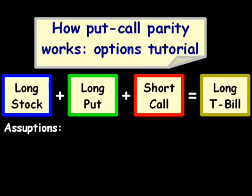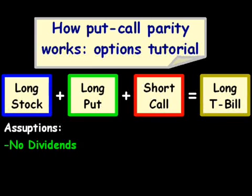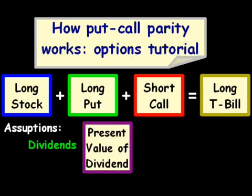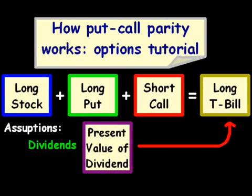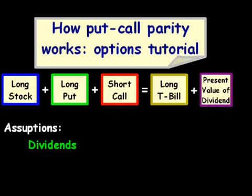Now, we have a couple of assumptions here. Our first assumption in put-call parity is that there are no dividends. If there were dividends, what we would do is we would add the present value of the dividend and put that on the right side of the equation next to the long T-bill. So our equation would look something like this: long stock plus long put plus short call equals long Treasury bill plus the present value of the dividend or multiple dividends.